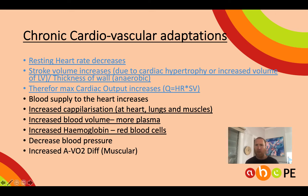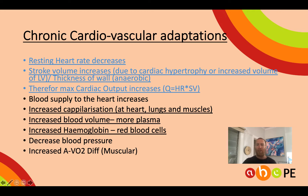First, we're talking about an increase in stroke volume — basically the heart gets bigger. Just like your biceps get bigger when you go to the gym, if you train your heart it will also get bigger. In particular, the left ventricle gets bigger, meaning it can pump out more blood per beat, giving us an increase in stroke volume. In that blood is the oxygen trying to get to the muscles.